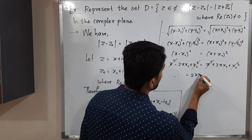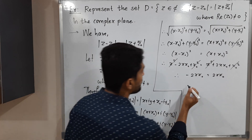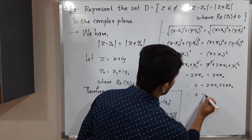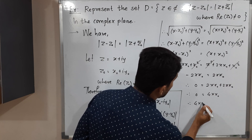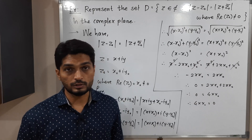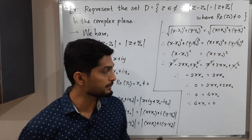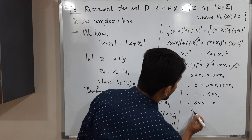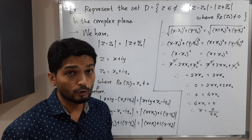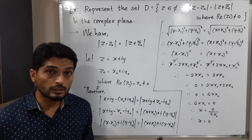We cancel X² and X naught² from both sides. The remaining terms are minus 2X·X naught on the left and plus 2X·X naught on the right. Shifting gives 0 equals 4X·X naught. Since 4 is a constant and X naught is non-zero (because the real part of Z naught is non-zero), we can divide both sides by 4X naught, giving X equals 0.